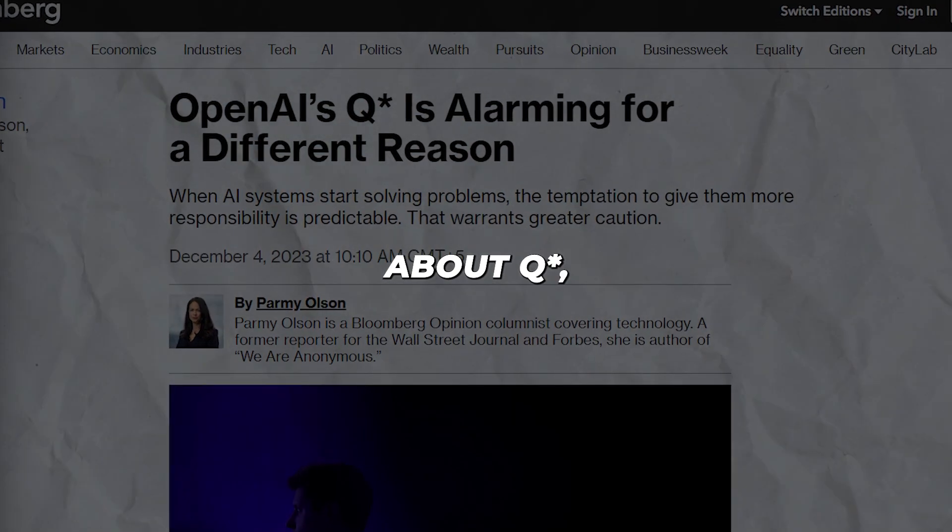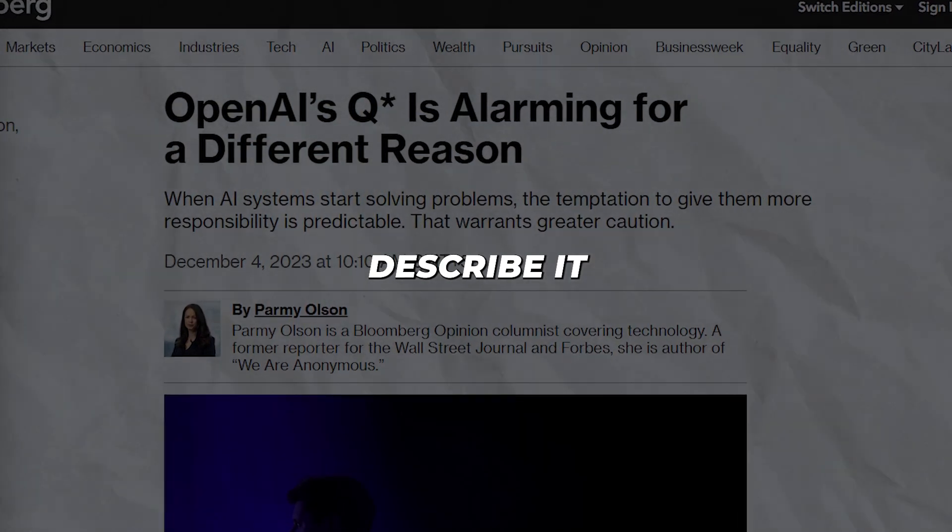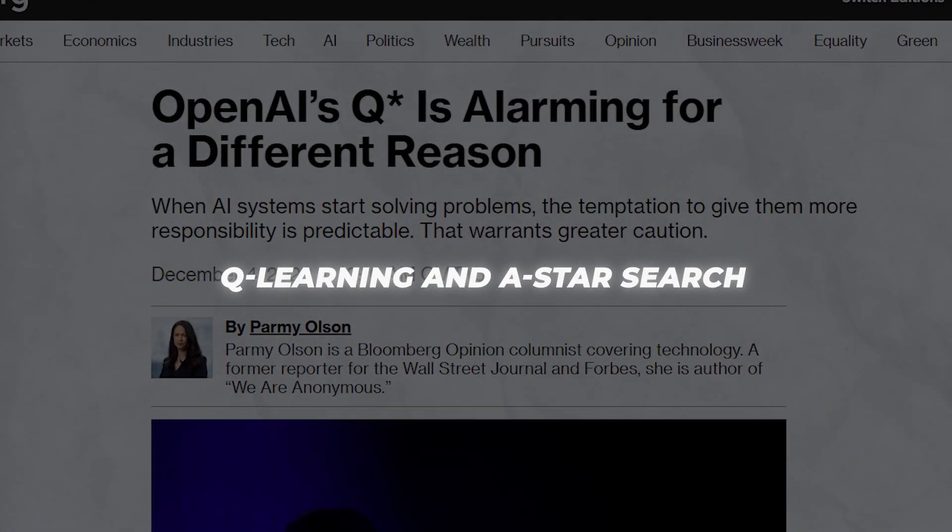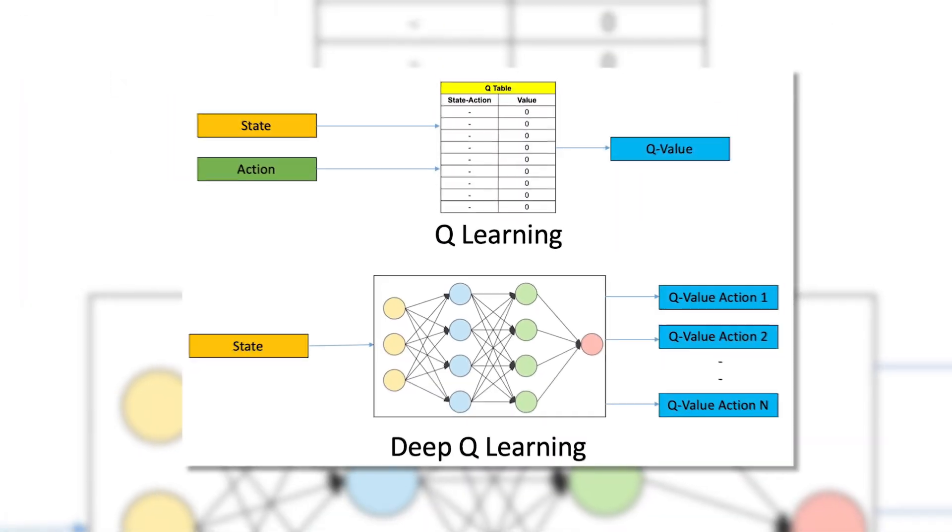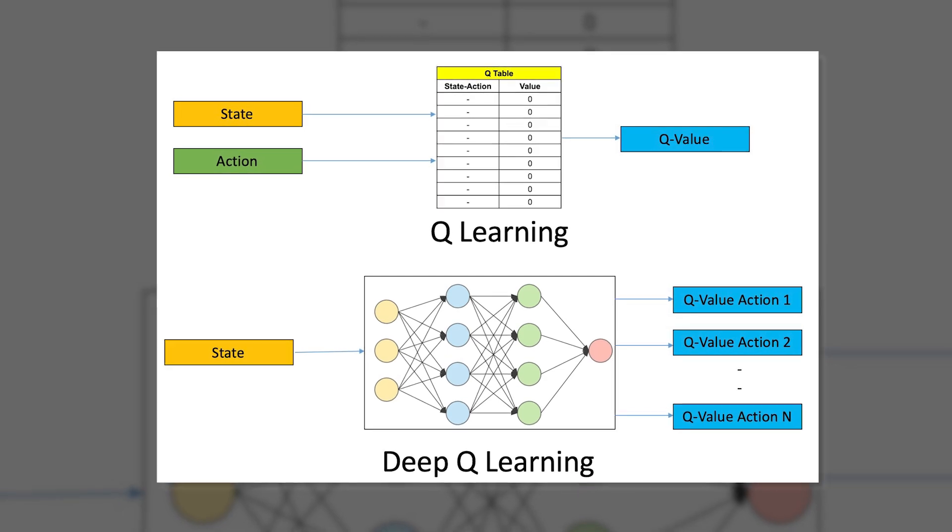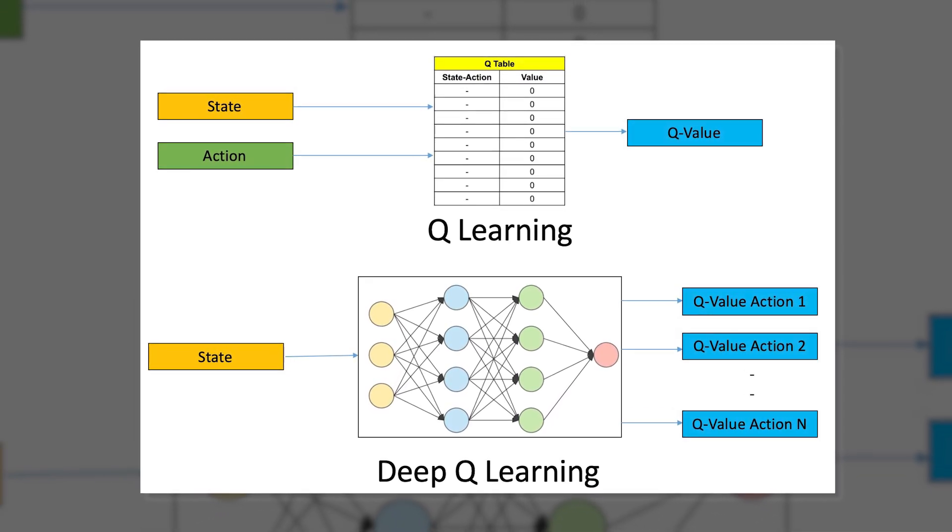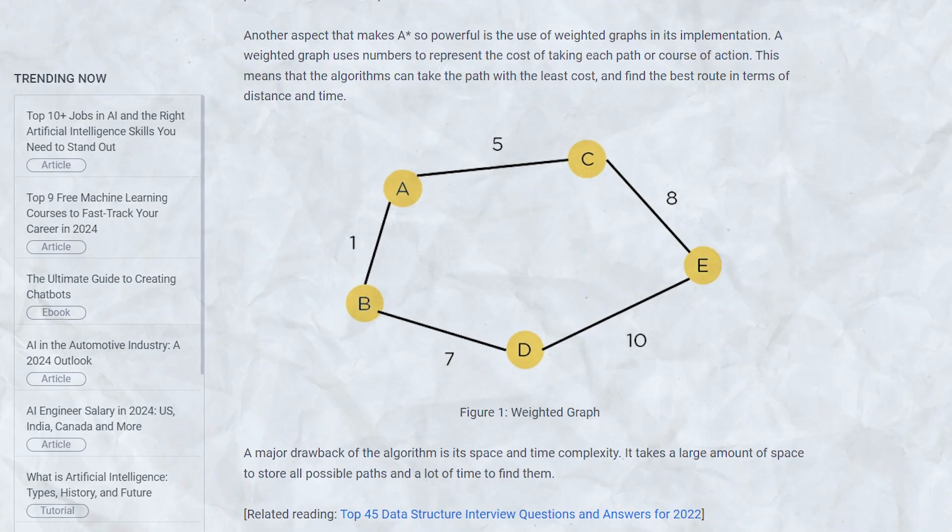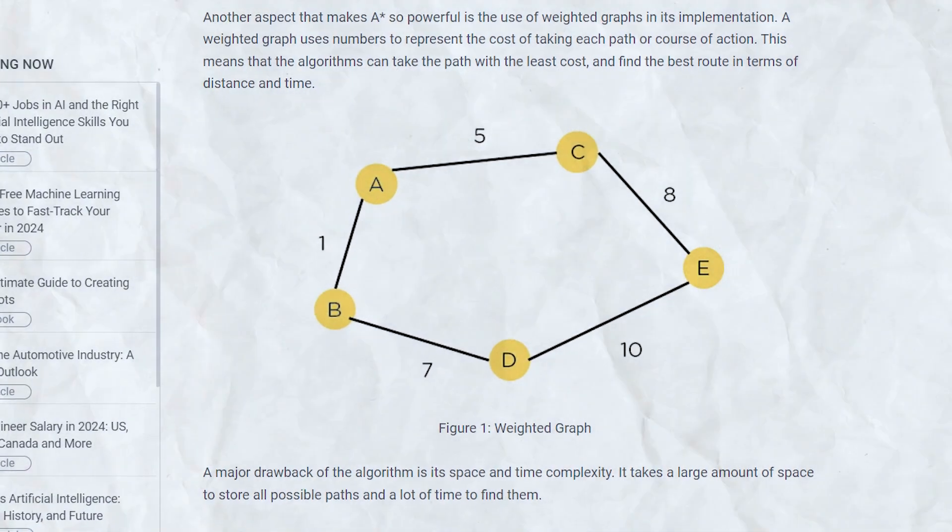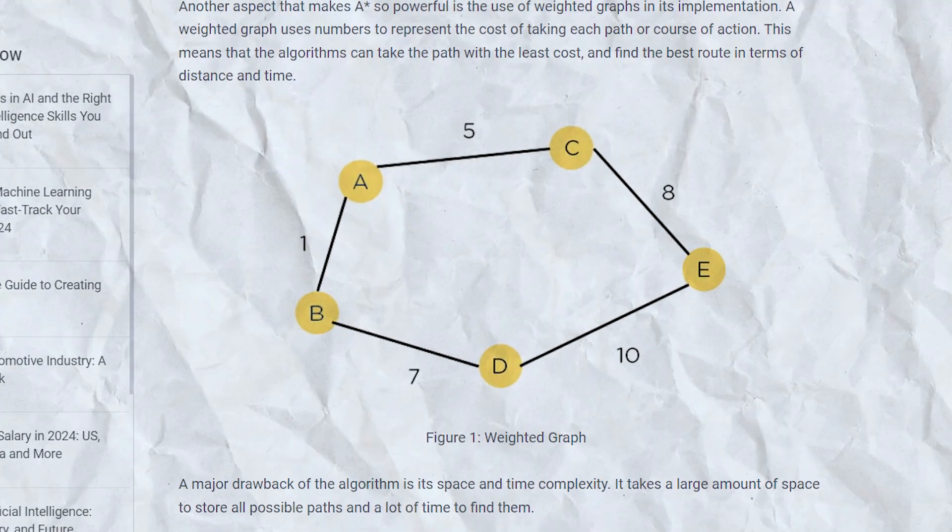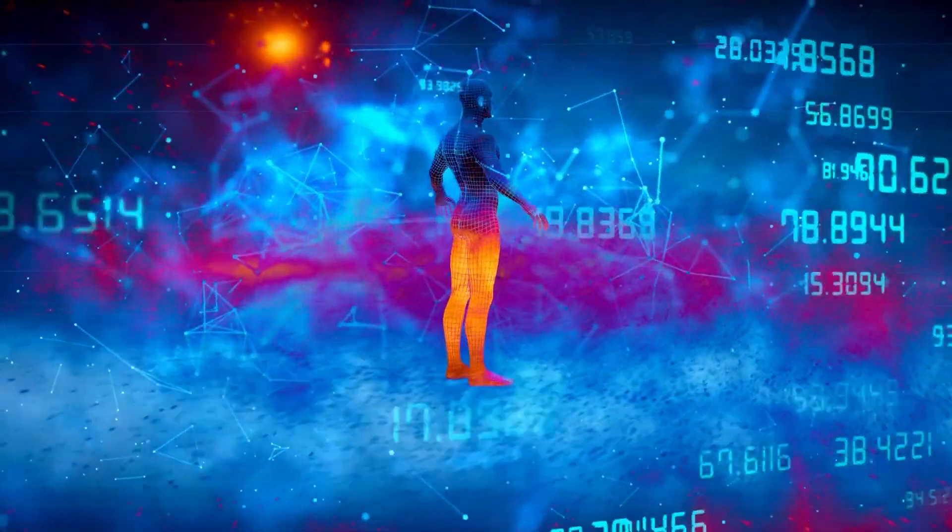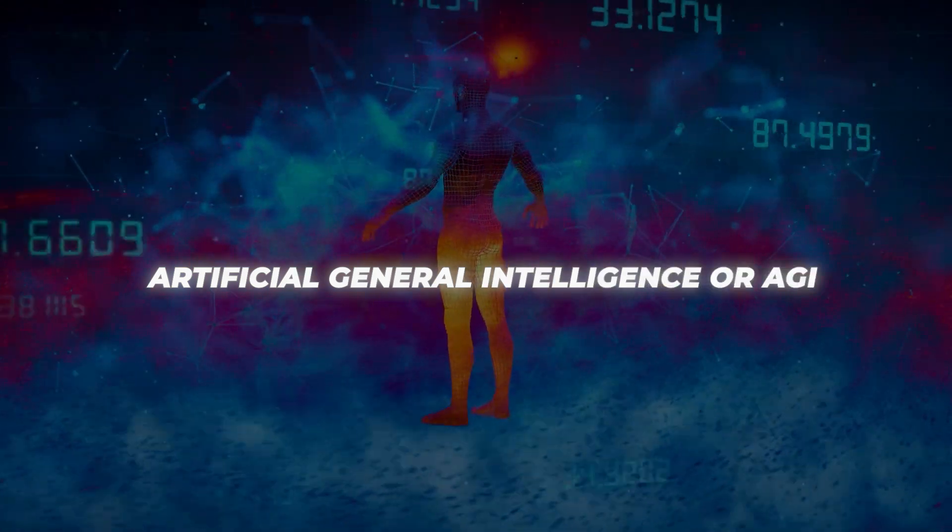Very little is officially known about Q*, but leaks describe it as a combination of two key algorithms: Q-learning and A* search. Here's the thing. Q-learning is a pivotal technique in reinforcement learning, where AI systems learn via trial and error to maximize rewards. And A* search algorithms are used to efficiently navigate routes. Combined, these could endow AI with heightened reasoning and strategic planning abilities, abilities that inch closer to advanced AI, also called artificial general intelligence or AGI.